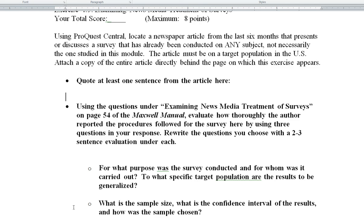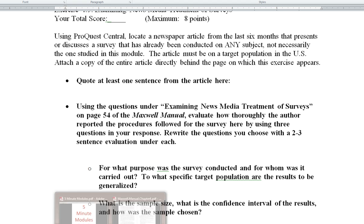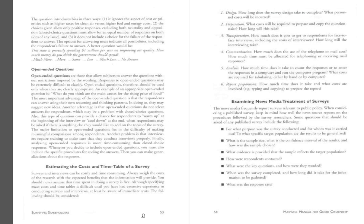One is to quote one sentence from the article, and the other is to examine it using questions from the Maxwell Manual. I've already typed out the questions here inside the module, but let me just quickly show you where the questions are. They're at the bottom of page 54, and it says Examining News Media Treatment of Surveys, and these are the questions here with the bullet points.